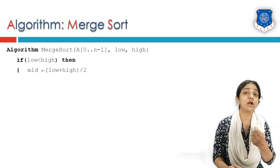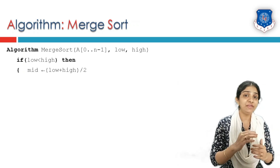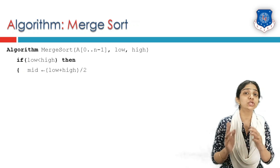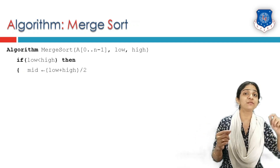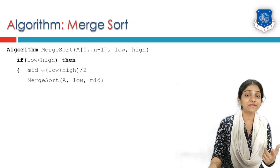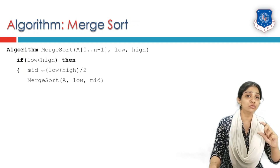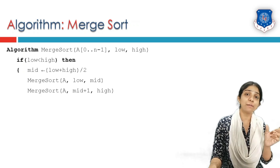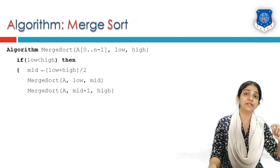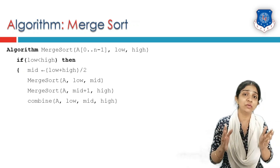If that condition holds, we find the mid-index of the array list: mid = (low + high) / 2. We then call merge sort recursively over two different sublists — one from low to mid (left subarray) and another from mid+1 to high (right subarray). This way, merge sort is called twice over two different sublists of the original list A.